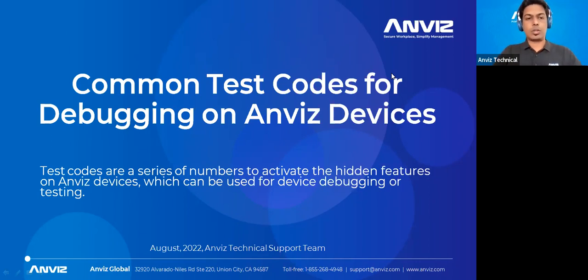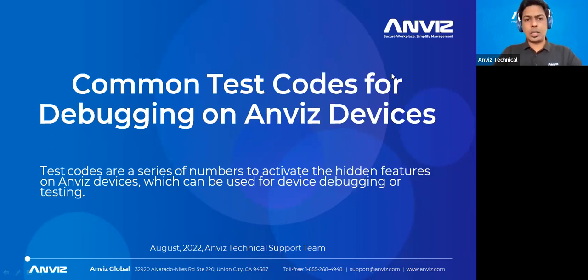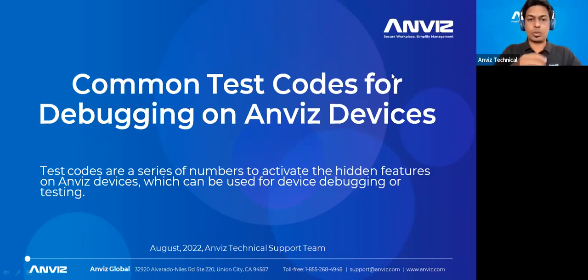In this training, we are going to discuss test codes — basically troubleshooting codes which can be used for configuring or troubleshooting your devices. In some cases, these will activate a number of hidden features which are not open to all public customers. These test codes will help the installation team to open up and activate some hidden features, giving them ease of installation and troubleshooting. If your device is malfunctioning somewhere, you can use these test codes to troubleshoot the devices.